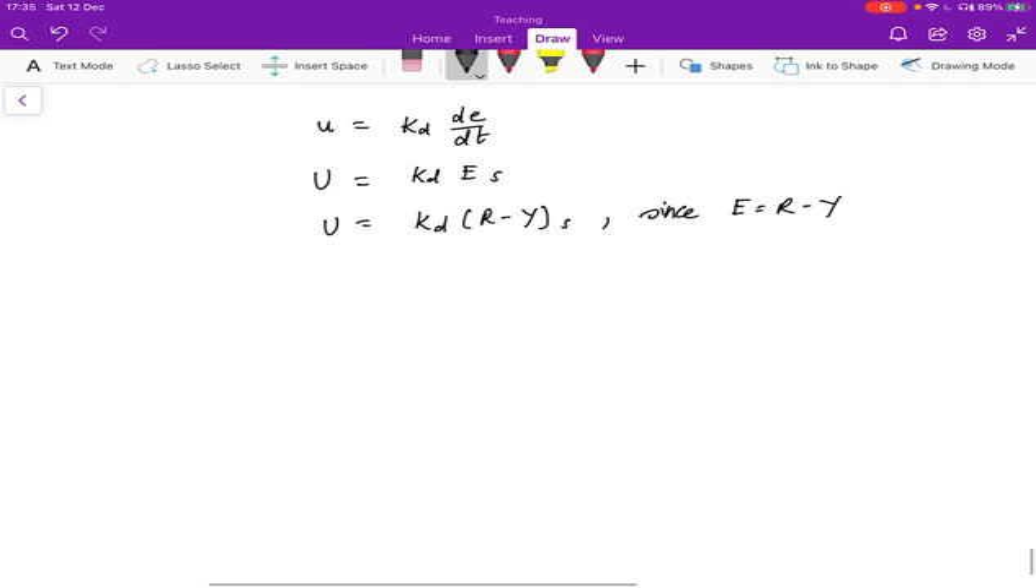And so we can write y equals 1 over s, which is G, times (u minus w), and this is going to be 1 over s, and just expanding this out, kd (r minus y) s minus w. And if you rearrange this, you get y equals basically kd over 1 plus kd times r minus, and this is the transient response to the disturbance, 1 over (s times (1 plus kd)) times w. And so we see that the disturbance is being attenuated by the ratio 1 plus kd, which is the disturbance rejection part of the controller.